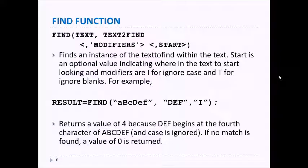The FIND function allows you to find an instance of text within some other text. The start value is optional, indicating where to start looking for the text that you're looking for. For example, if I have RESULT equals FIND and I have ABCDEF and then DEF as the text to find, it returns the value four because DEF begins at the fourth character of ABCDEF. The case is ignored because of the I modifier. If no match is found, then the value of zero is returned.